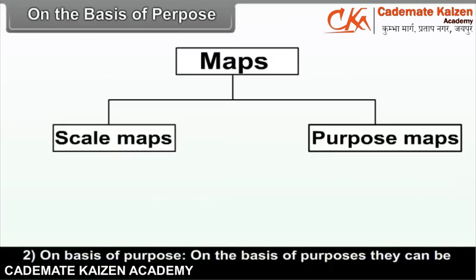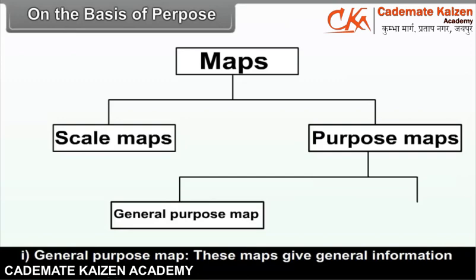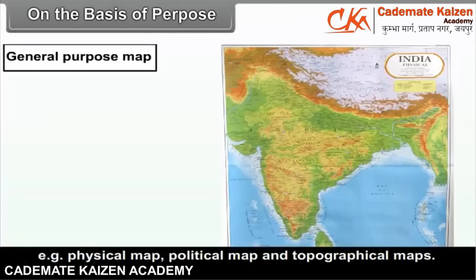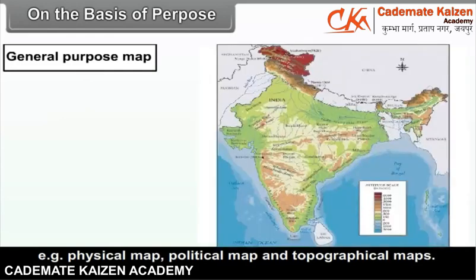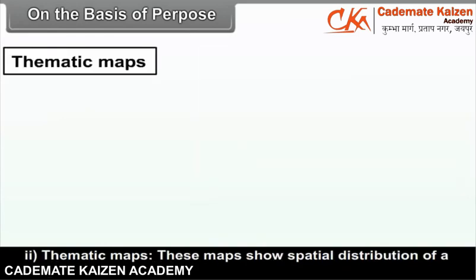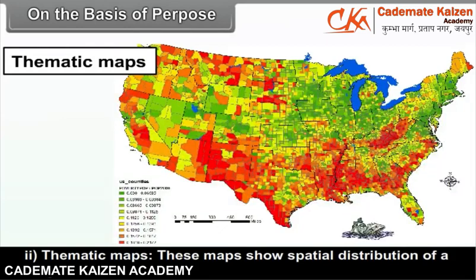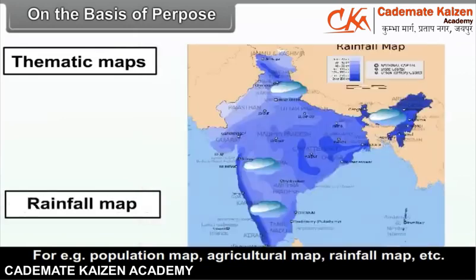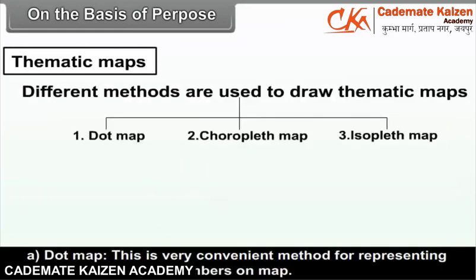On the basis of purpose, maps can be divided into two. A: General purpose maps — these maps give general information of different types of data, for example, physical map, political map, and topographical maps. B: Thematic maps — these maps show spatial distribution of a single theme, for example, population map, agricultural map, rainfall map, etc. Different methods are used to draw thematic maps.